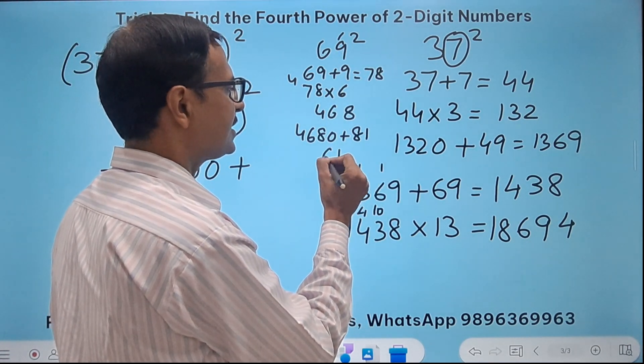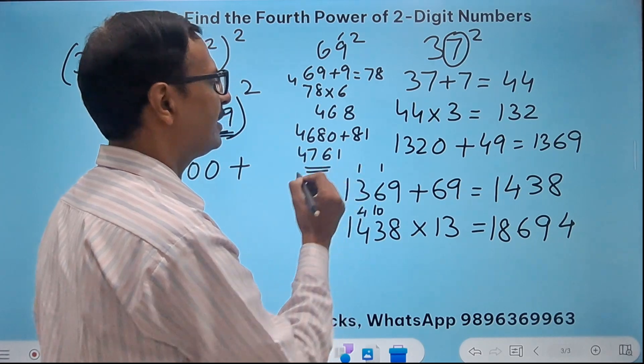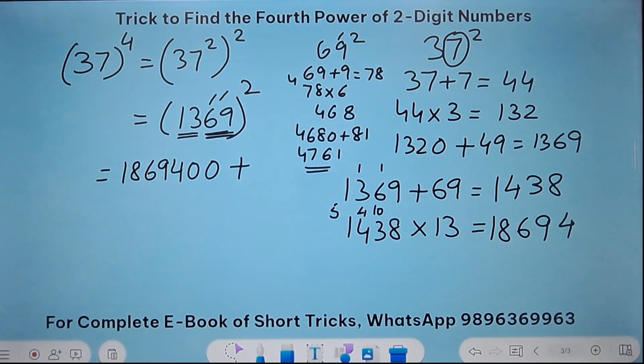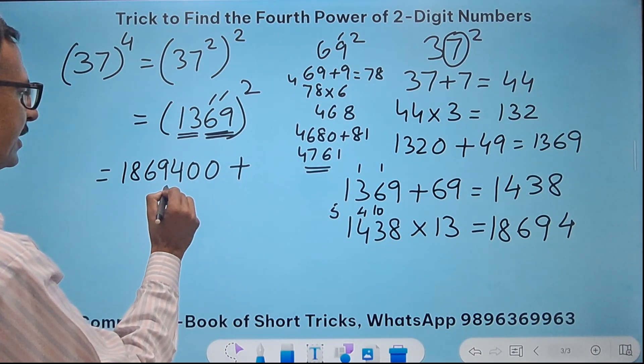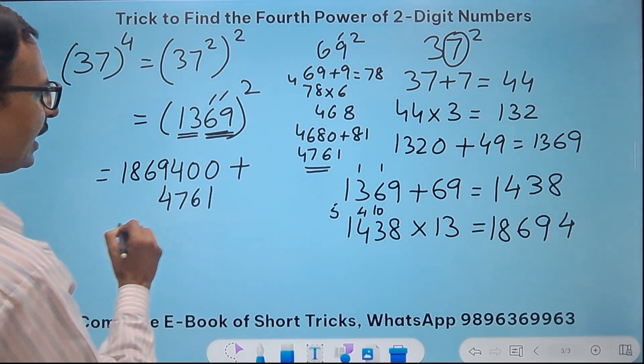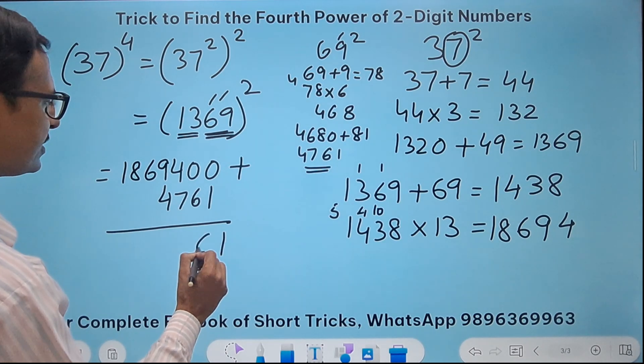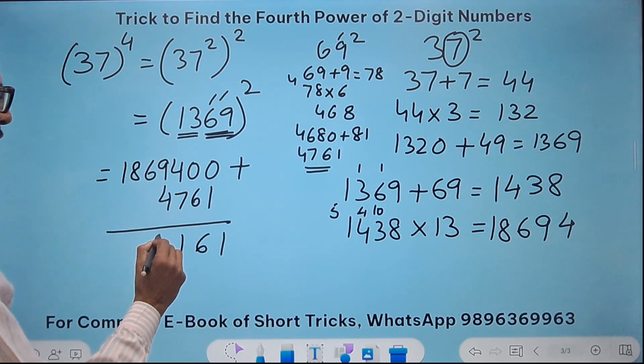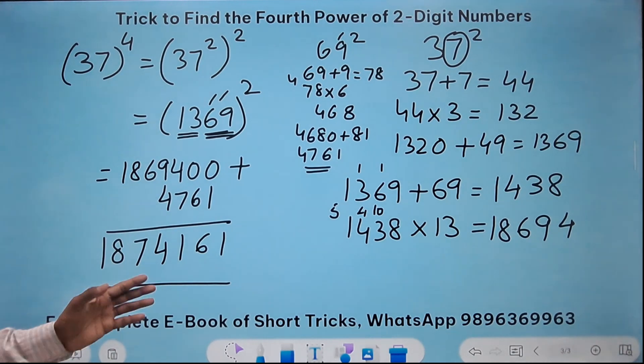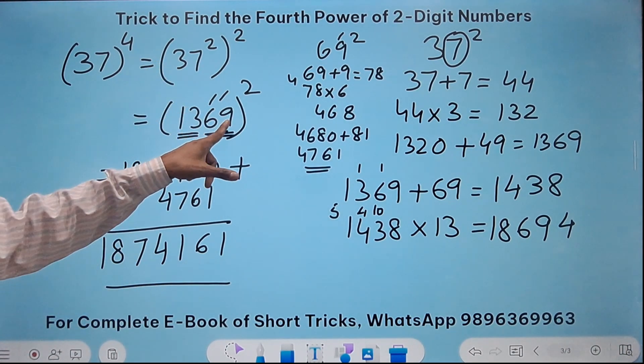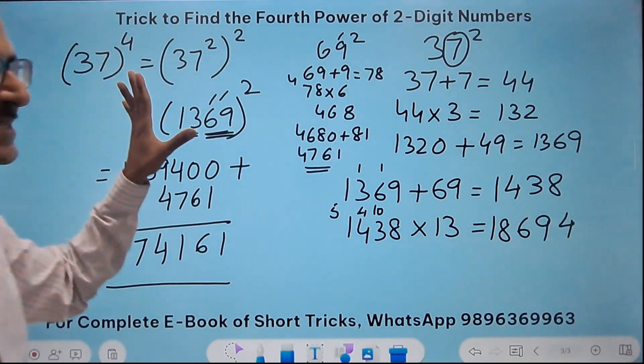That gives me 4761. That is the square which I need to add to this number. So add. I write here 4761. And my answer for the question will be 1874161 happens to be the square of 1369 and that is the fourth power of 37.